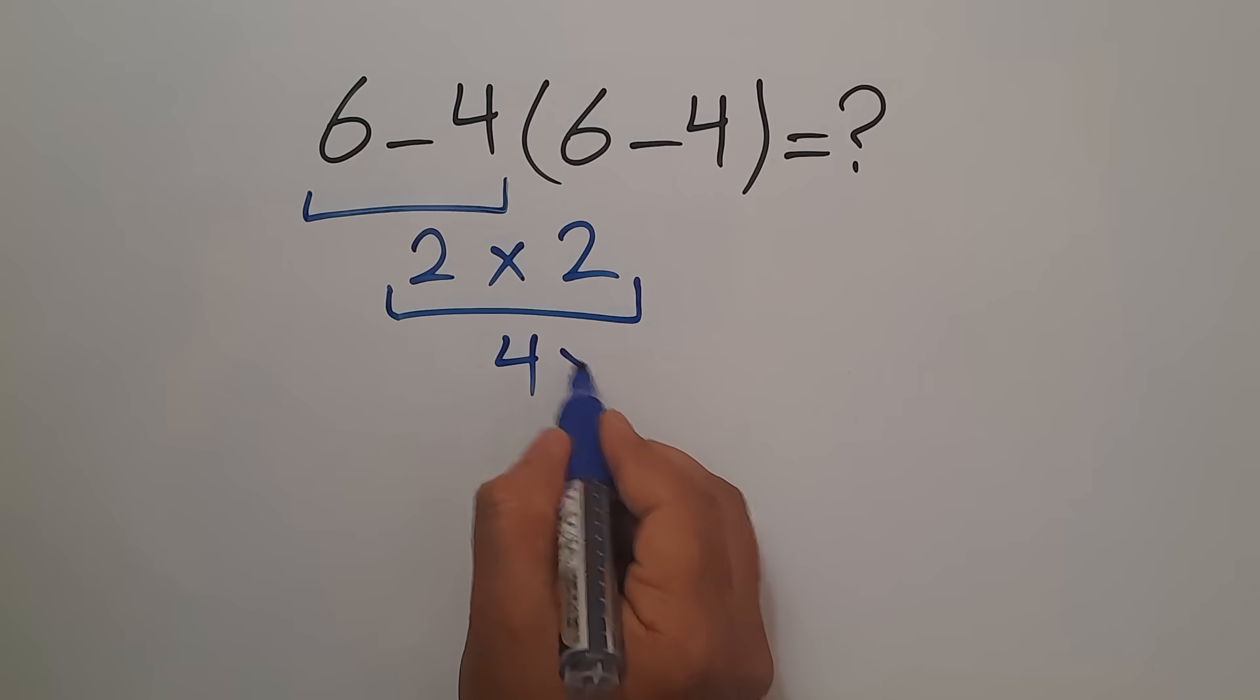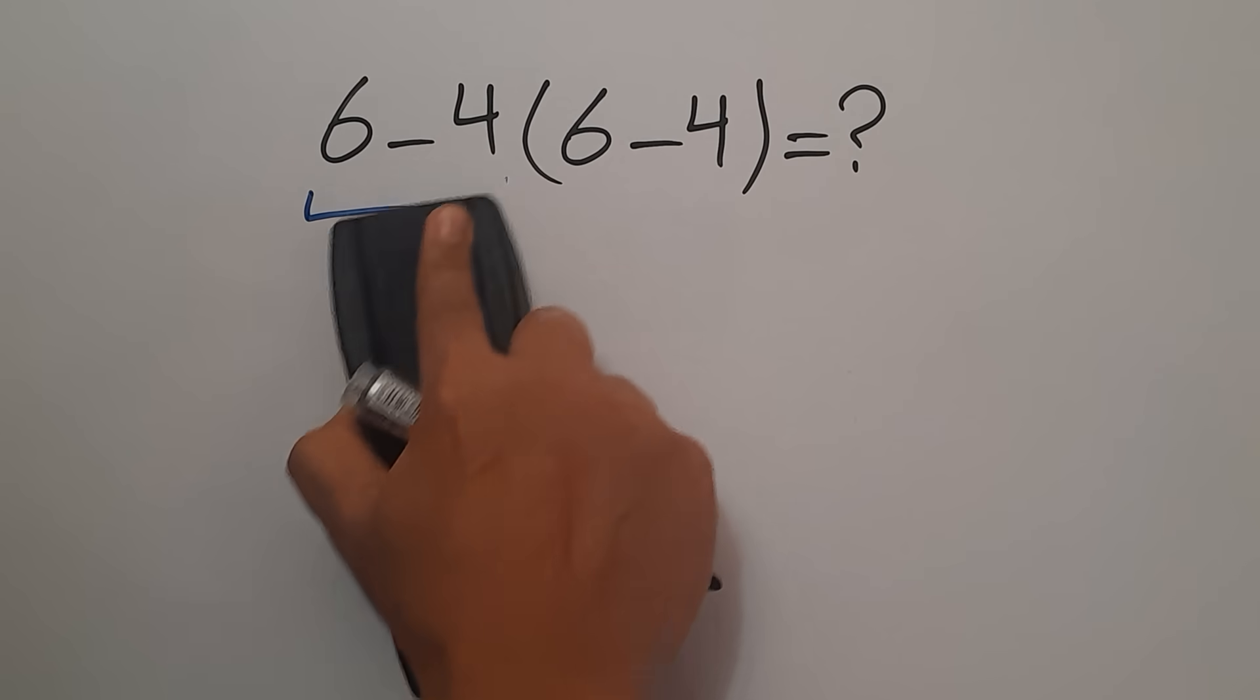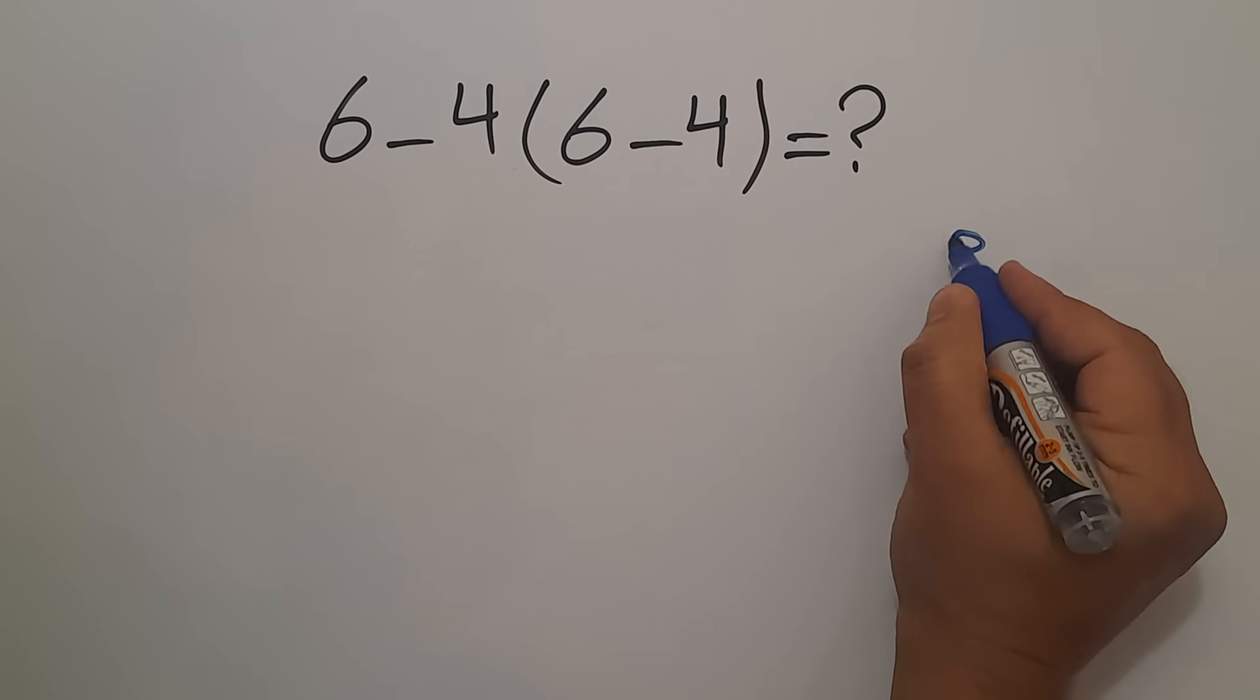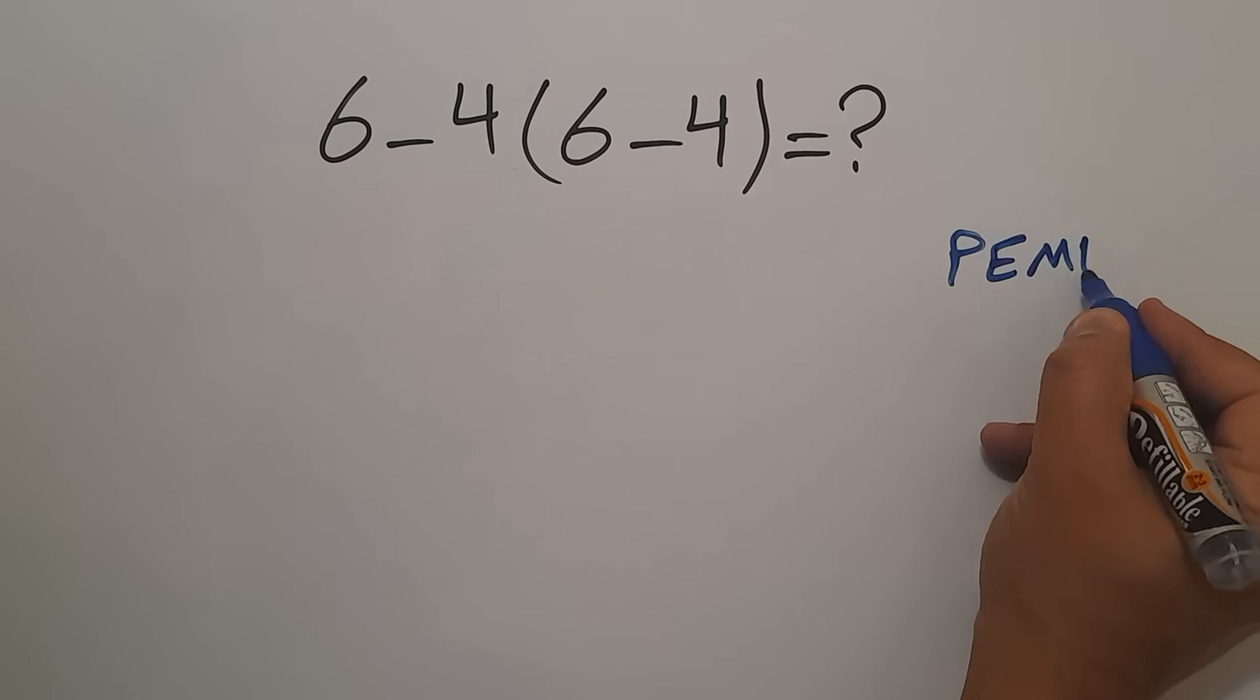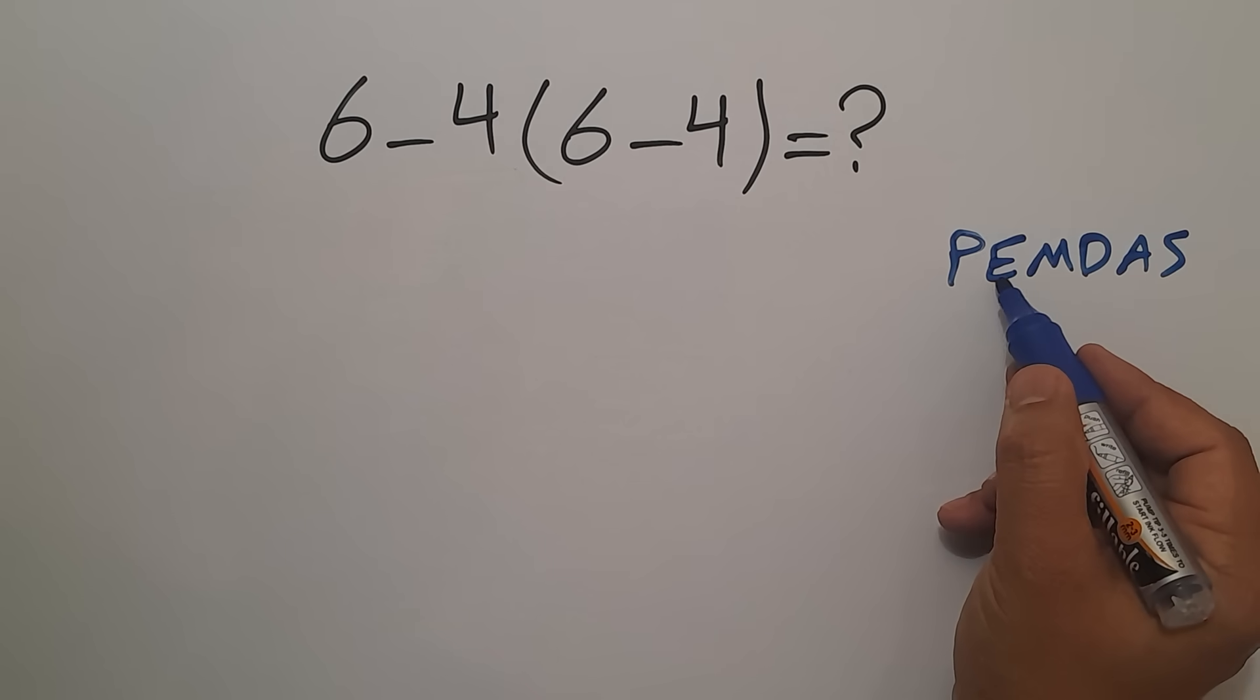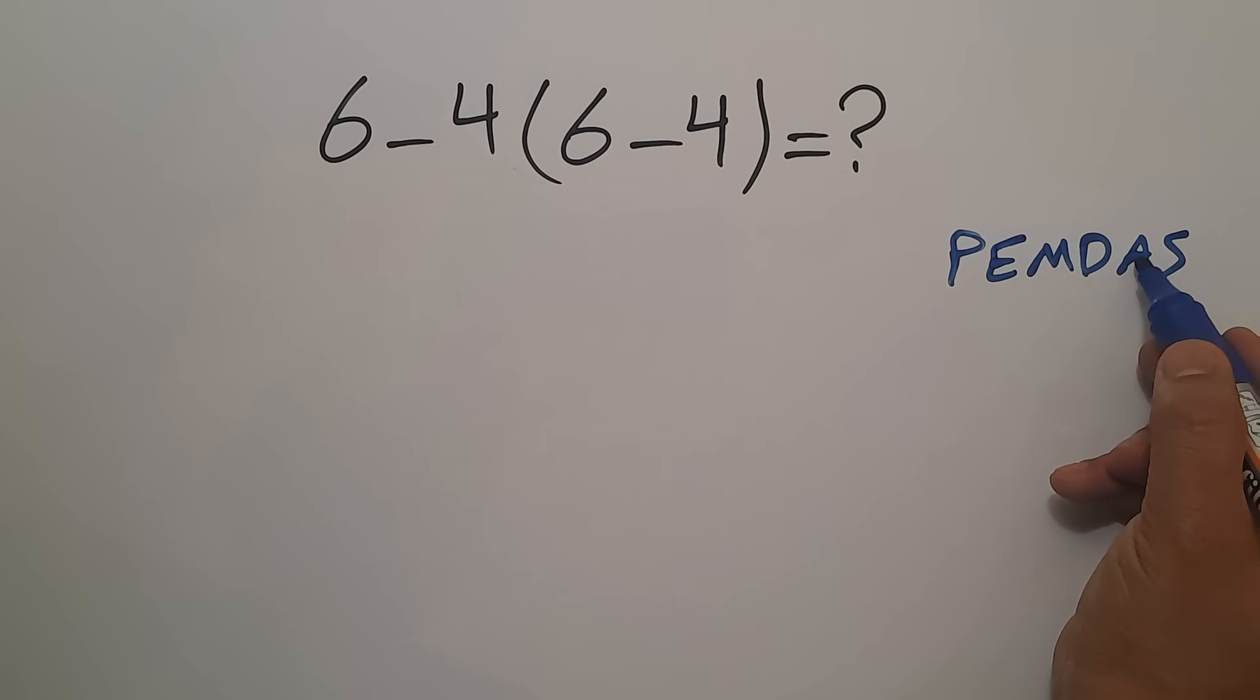But this answer is not correct because according to the order of operations which is PEMDAS, P stands for parentheses, E stands for exponents, M and D stands for multiplication and division, and A and S stands for addition and subtraction.